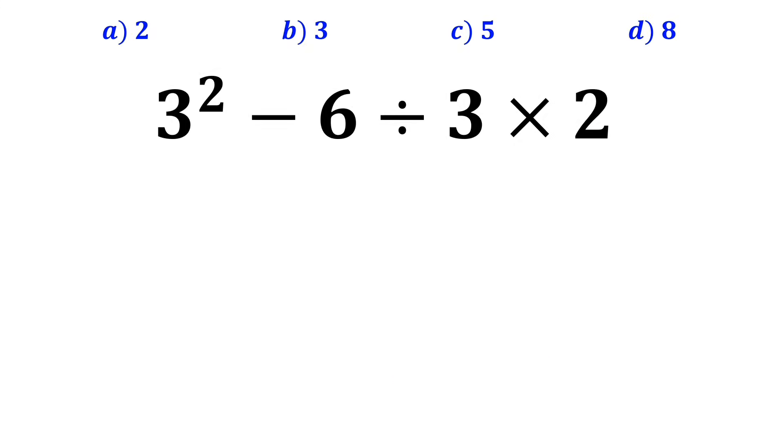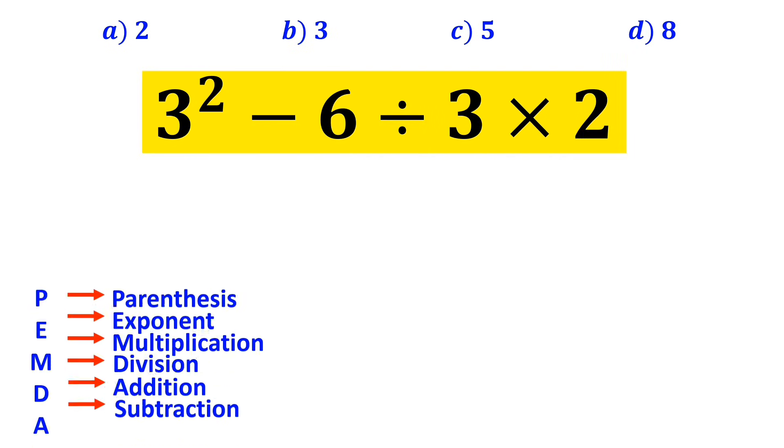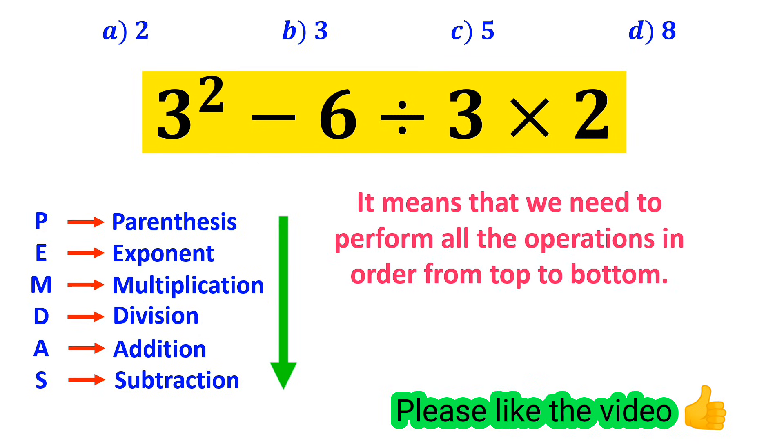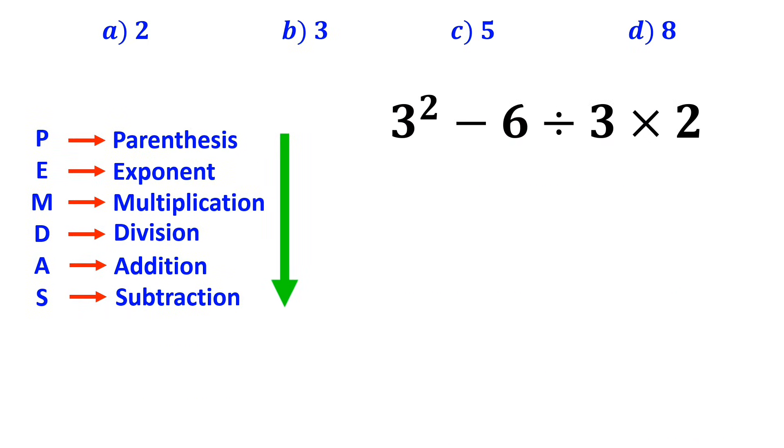Now let me show you step by step how to solve this expression. To solve this problem, we must follow the PEMDAS rule. It means that we need to perform all the operations in order from top to bottom. As you can see in the image, in this expression, we have an exponent first, then a subtraction, followed by a division, and finally a multiplication.